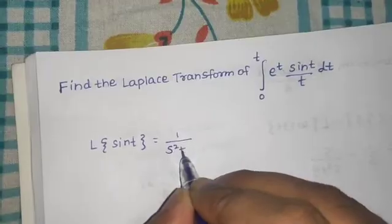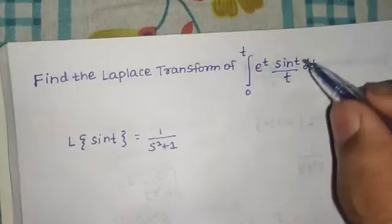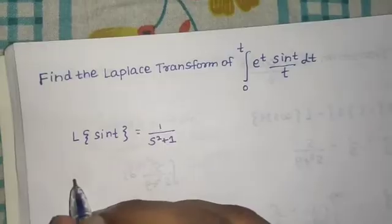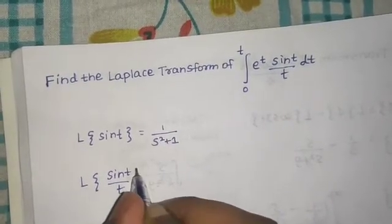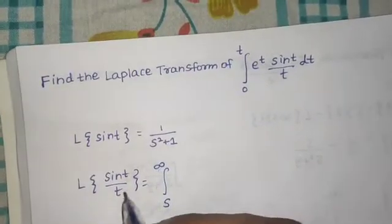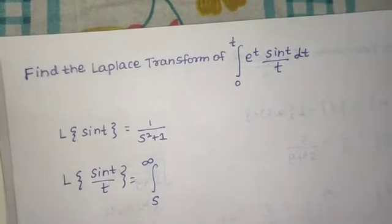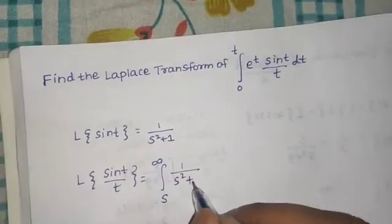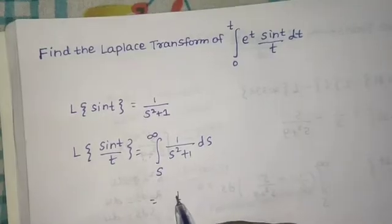Now we'll use the division by t property. If we divide by t — that is, sin(t)/t — we integrate from s to infinity of whatever is the Laplace transform of the numerator. The Laplace transform of sin(t) we already found is 1/(s² + 1), so we integrate this with respect to s.